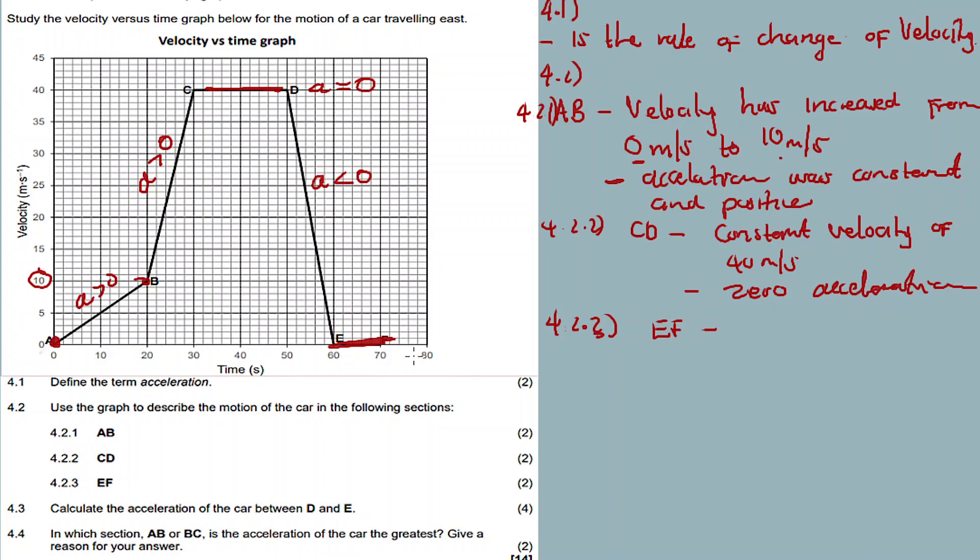Question 4.2.3, section E-F. For E-F we see that the car stopped moving. The line is flat, meaning there's zero velocity, nothing is happening. There is something happening but it's zero velocity - the car stopped moving. What else is there? There is zero acceleration as well.